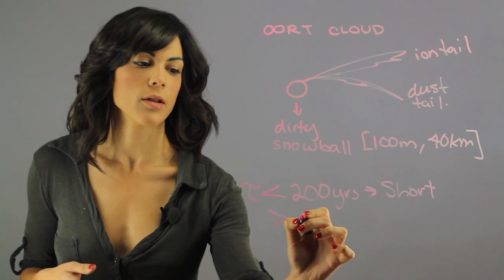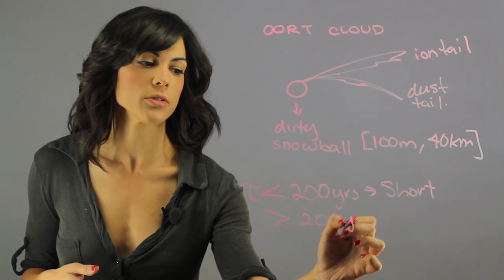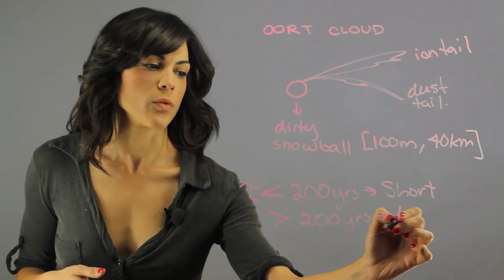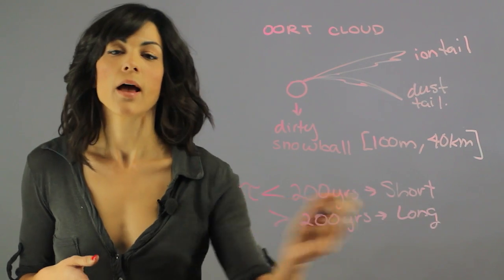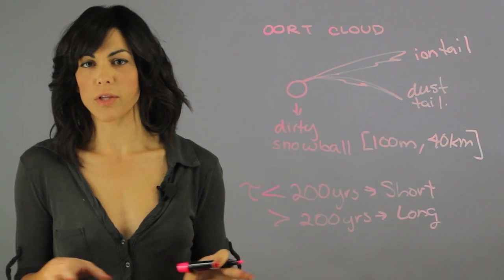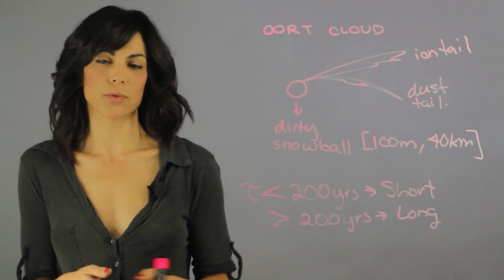If they have a period greater than 200 years, we refer to them as long period comets. These are generally not bound by the sun and could have different types of orbits.